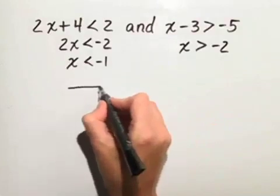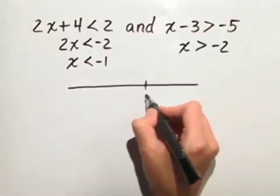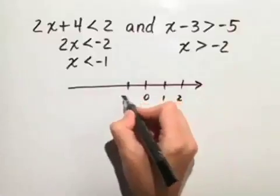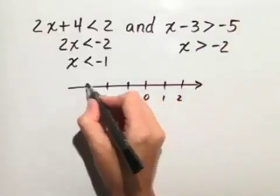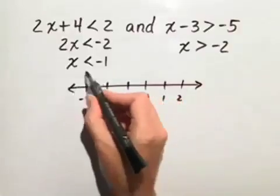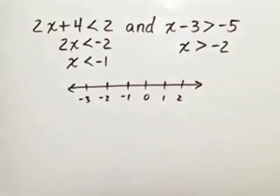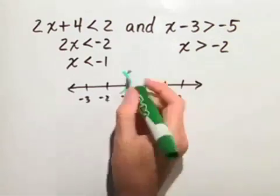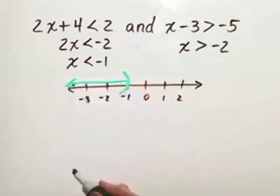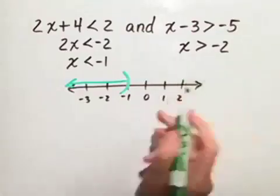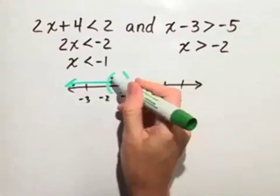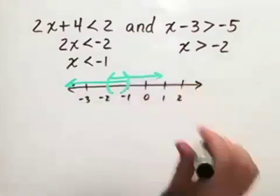Now, in order to graph this on a number line, let's first start with our first inequality. x is less than negative 1. So, from negative 1, we want values to the left. And x is greater than negative 2. So, from negative 2, we want values to the right.